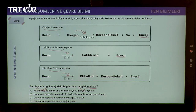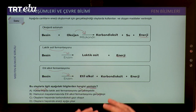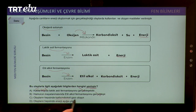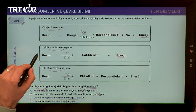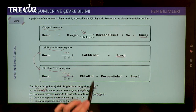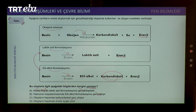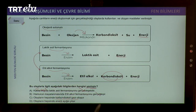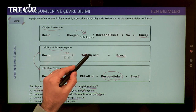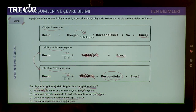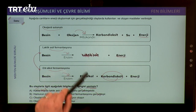Hamurun mayalanmasında etil alkol fermentasyonu gerçekleşir — evet, orada açığa çıkan karbondioksit hamurun kabarmasını sağlıyordu. 'Olayların hepsinde karbondioksit gazı oluşur' ifadesi için: fermentasyonda laktik asit ile etil alkol fermentasyonunu birbirinden ayıran bir olay vardı. Bir tanesinde karbondioksit oluşurken diğerinde oluşmuyordu. Eğer karbondioksit çıkışı varsa buna etil alkol fermentasyonu diyeceğiz.